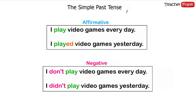Now for the affirmative phrase. You see here a phrase in the simple present: "I play video games every day." If you want to change this to the simple past form, you have to add "-ed" to the verb "play": "I played video games yesterday." For the negative form in the simple present: "I don't play video games every day." In the simple past, you change "do" to "did": "I didn't play video games yesterday."